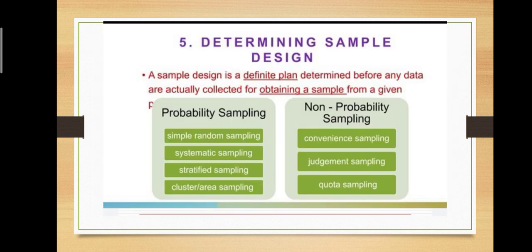The next step is determining the sample design. A sample design is a definite plan, determined before any data are actually collected for obtaining a sample from a given population. Sample designing are done before the commencement of the data collection. To obtain a sample from a given population, it is a definite plan, determined to select the sample before any data are actually collected.